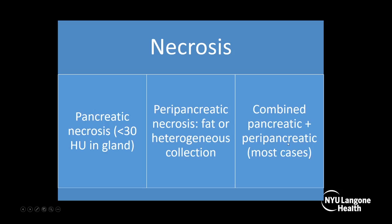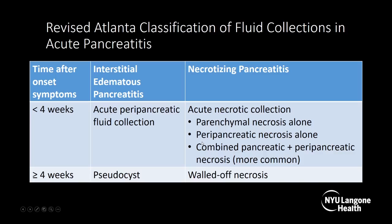The revised Atlanta classification incorporated peripancreatic fat necrosis into a description of pancreatitis. This classification of fluid collections in acute pancreatitis should be committed to memory. It's broken down based on time after onset of symptoms and whether it's necrotizing pancreatitis or interstitial edematous pancreatitis. If it's less than four weeks after onset and there's no necrosis, a fluid collection is called an acute peripancreatic fluid collection — simple fluid with nothing in it.